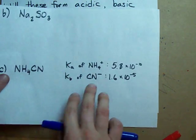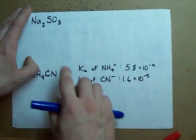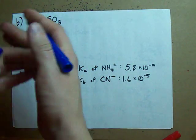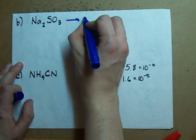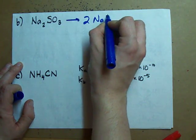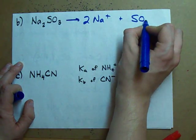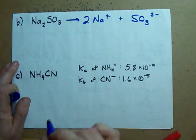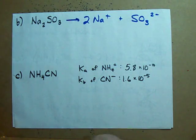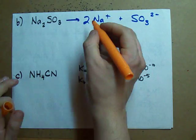Let's try this again. When you dissolve Na2SO3 in solution, what do you get? Well, you get two Na+ ions, and you get an SO3 2- ion. What are these the conjugates of?